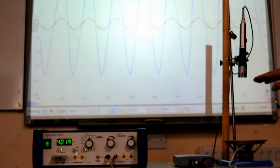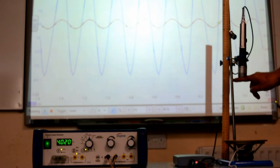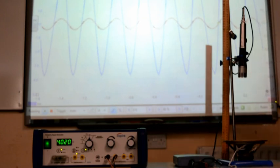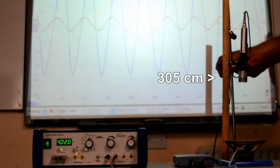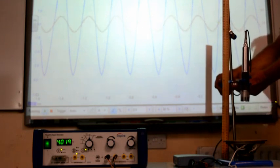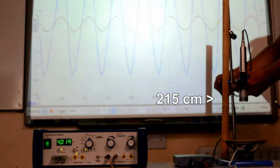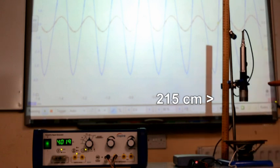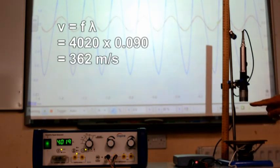Finally at just over 4000 Hz the distance moved is smaller still. The calculation this time gives a speed of sound of 362 m per second.